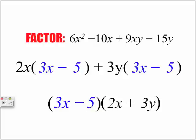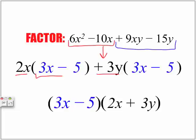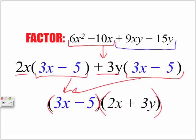Here is how we started: factoring a four-term polynomial. We grouped the first two terms and the last two terms. We found the common factor — 2x in the first group and positive 3y in the second group. Once factored, we confirmed that both sets of brackets were identical. We then factored out the identical bracket, and wrote whatever was left over in a new set of brackets to form our final answer as a product of two binomials.